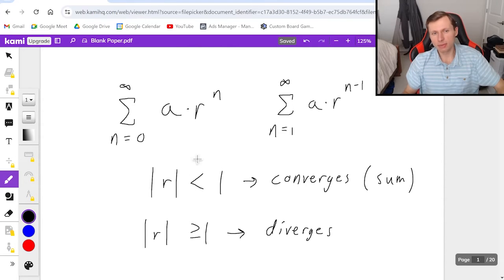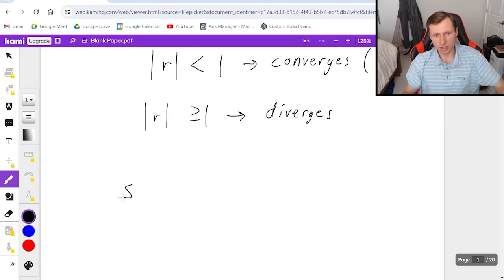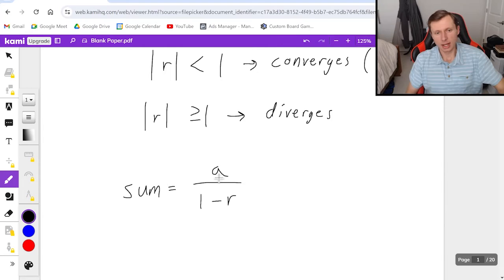And if you do want to find the sum, then here's the formula. Sum equals a over one minus r. Two things I want to say about this. A is the first term in the series. And whenever you have a negative r, like let's just say r equals negative one half, then that will be plus because it's a double negative in the denominator.